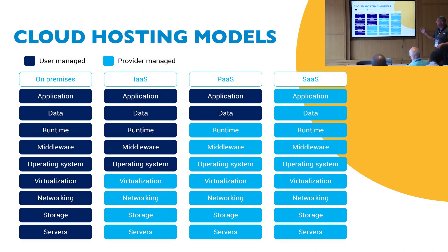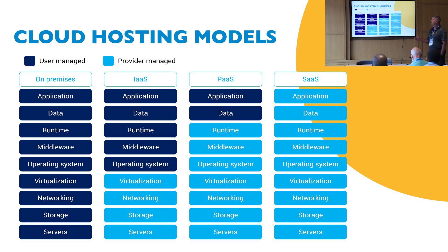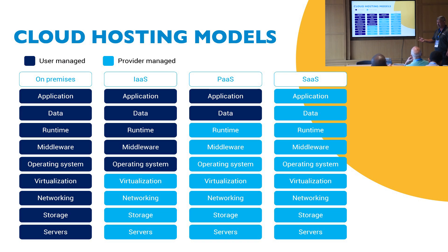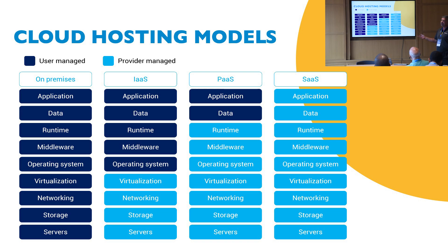You may have seen this slide in different iterations — it'll be referred to later in other decks as well, maybe in a different color format. This is the shared risk model, or shared destination model. From left to right, the color code is user-managed versus provider-managed. In the on-premises stack, which is legacy IT, I run my own facilities, I buy or lease my own gear, and I still have full responsibility, full ownership, and full control of that entire stack from a risk standpoint.